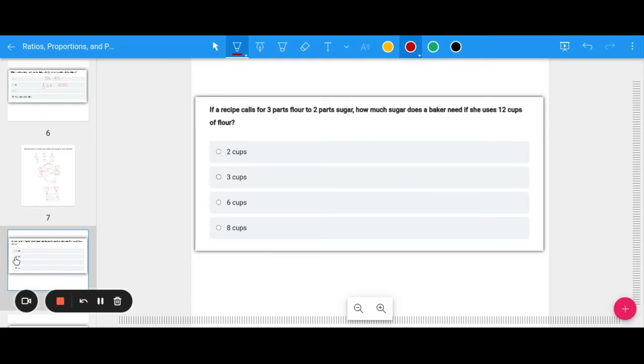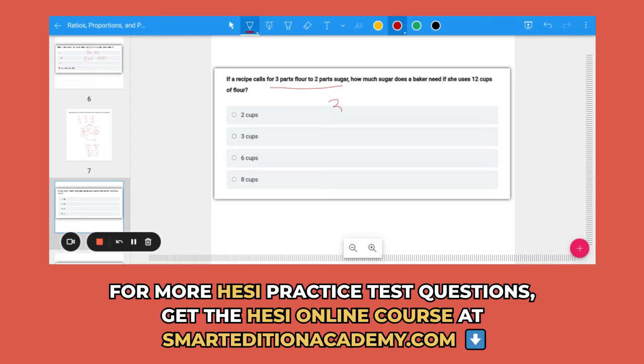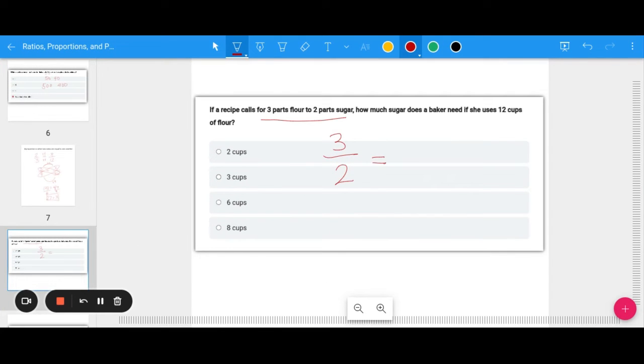Let's look at an example together. If a recipe calls for three parts flour and two parts sugar, how much sugar does a baker need if she uses 12 cups of flour? Three parts flour, two parts sugar can be written as the fraction 3 over 2, and that equals 12 over x for our sugar. Cross multiply: 3x equals 24. Divide by 3, you get x equals 8. She would need 8 cups of sugar.